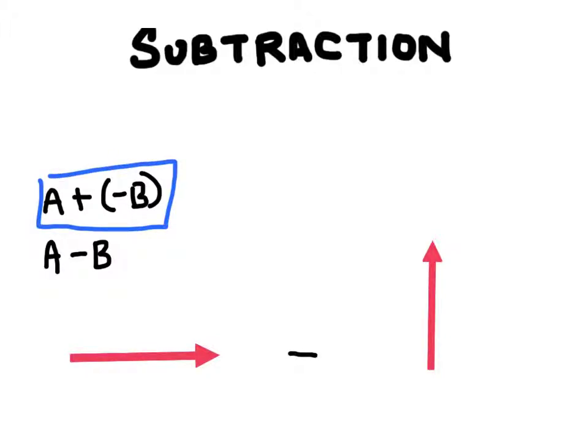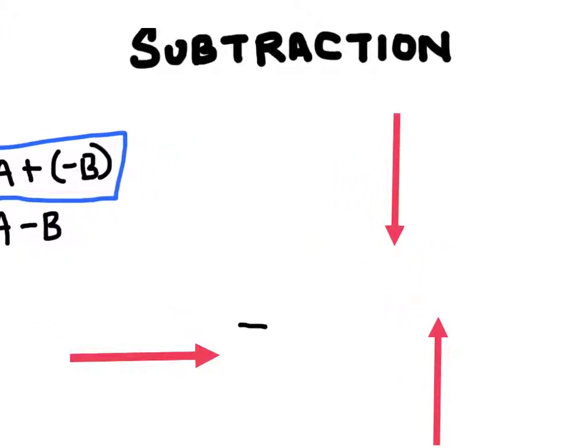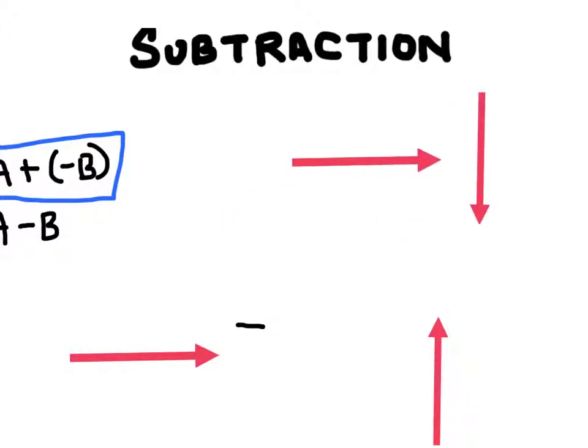And whenever we're going to change the sign of a vector, all we have to do is take that vector. So here's vector b and we're going to reverse its direction. So I'll take vector b here and I'm just going to switch it around. I'm just going to have the same magnitude, but now it's the negative of b. So here's my negative b and I'll bring in my vector a and we'll still do the same thing.